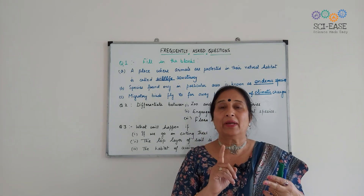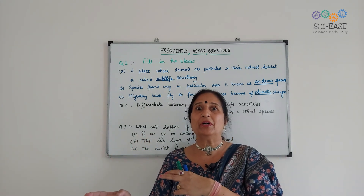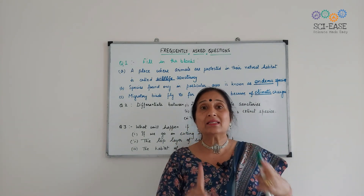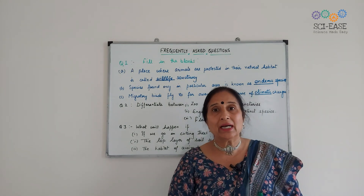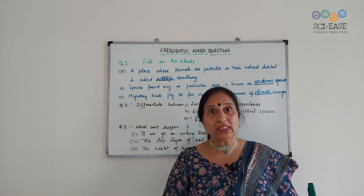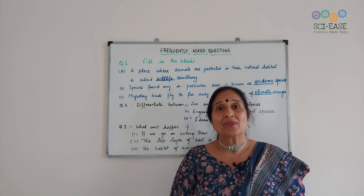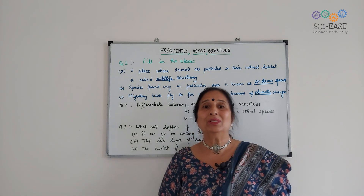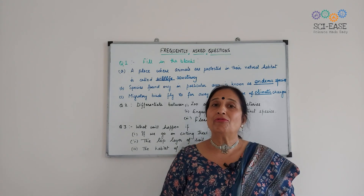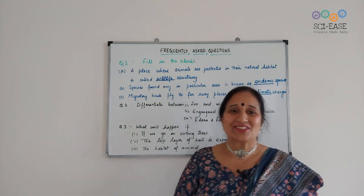Also, why we should conserve paper — 17 tall trees make 1 ton of paper, so we shouldn't waste paper. Remember the 3R formula. With this, my chapter on Conservation of Plants and Animals is finished. I will come with another chapter of Class 8 in my next video. Thank you very much.